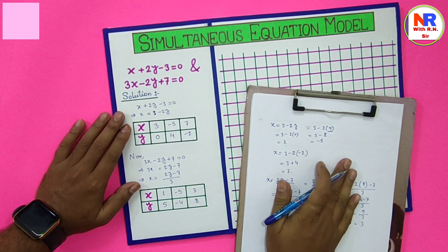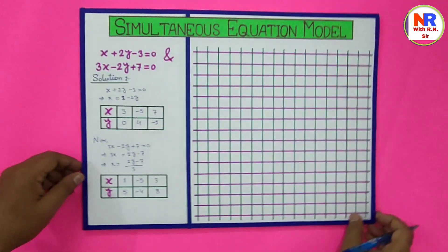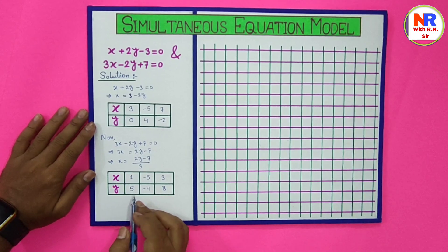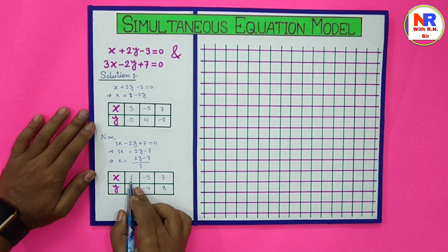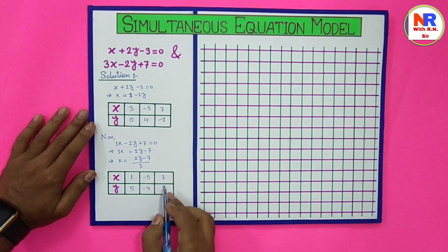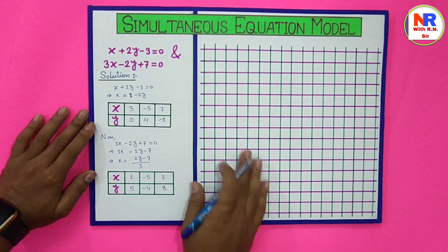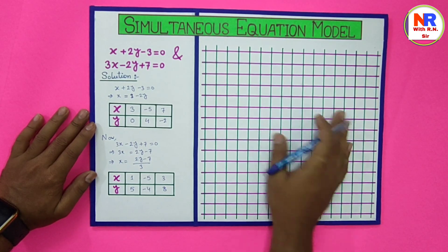This is the rough part of the solution. We now have three points for the second equation: (1, 5), (minus 5, minus 4), and (3, 8). We will now plot these values on the graph paper.